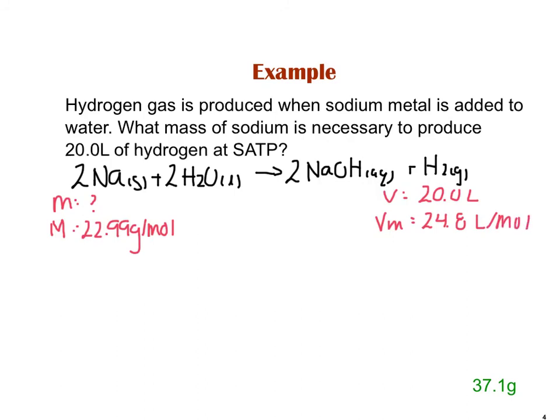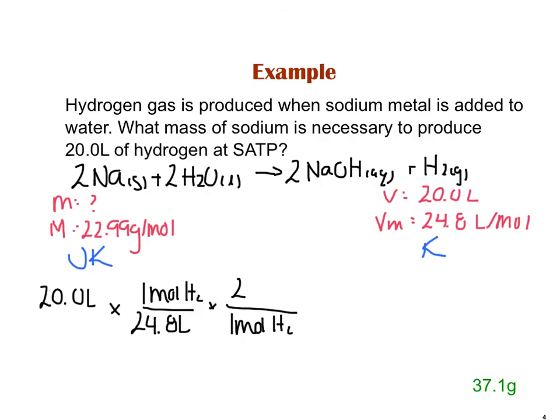So, starting with my known, and going towards my unknown, I'm going to start with 20 liters of hydrogen times 1 mole H2 per 24.8 liters times 2 moles of sodium per 1 mole of H2. We've got some cancellation happening. We're left with moles of sodium, but we're asked for mass, so we're going to use its molar mass of 22.99 grams per 1 mole of Na. Multiplying all the way across the top, dividing by everything across the bottom, we should get 37.1 grams.